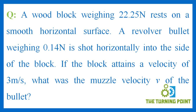A wood block weighing 22.25N rests on a smooth horizontal surface. A revolver bullet weighing 0.14N is shot horizontally into the side of the block. If the block attains a velocity of 3 meters per second, what was the muzzle velocity V of the bullet?